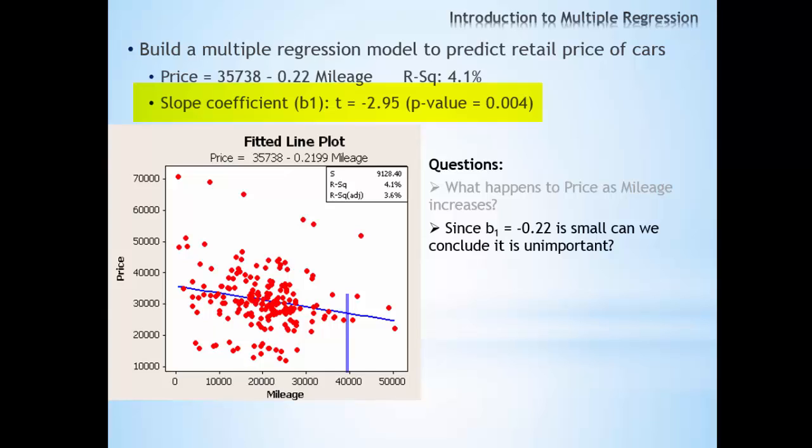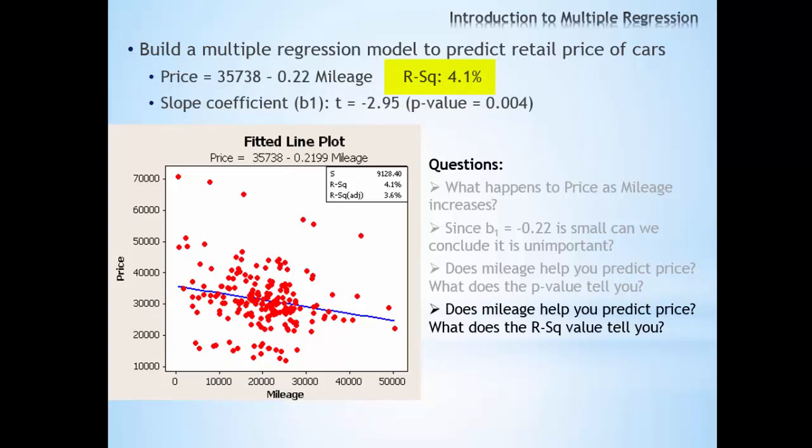If we talk about a car that has 40,000 miles versus a car that has 10,000 miles, the expected change in retail price is rather large. We do see by the test statistic and p-value that mileage is an important explanatory variable. There is a relationship between mileage and price. However, if you look at the R-squared value, we see that 4.1% is very low. We would like something much closer to 100%. This tells us that using mileage as the only explanatory variable may give us a predicted price that is very different than the actual retail price.